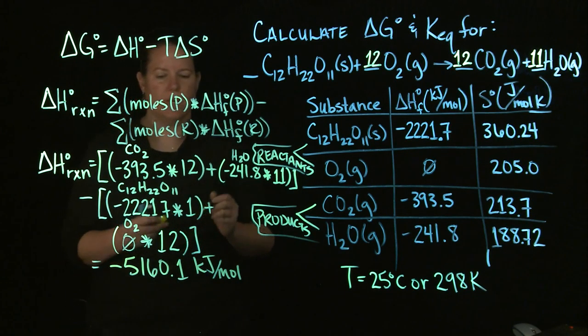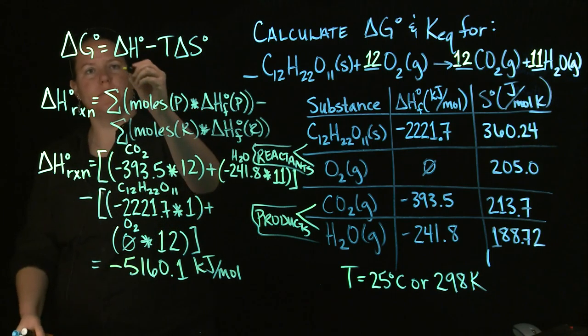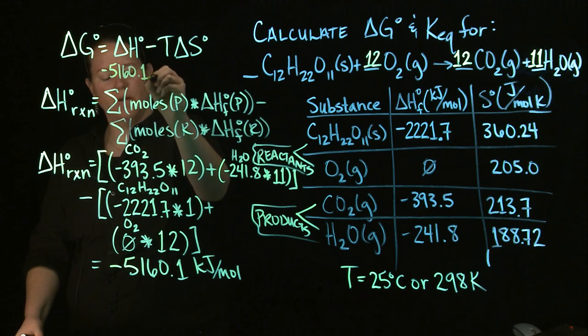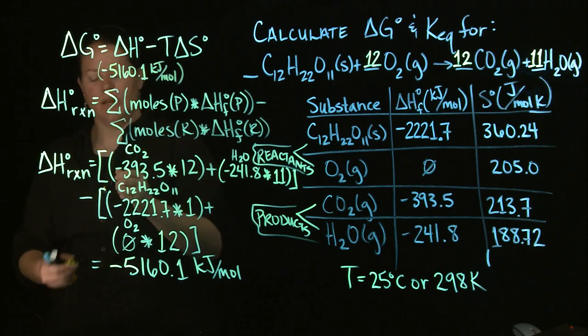Which is really super nice and way easier than doing the whole process. You are still of course welcome to do the whole process if you so wish. I got a cool number like negative 5160.1 and this is kilojoules per mole. Boy, that reaction releases a lot of heat.